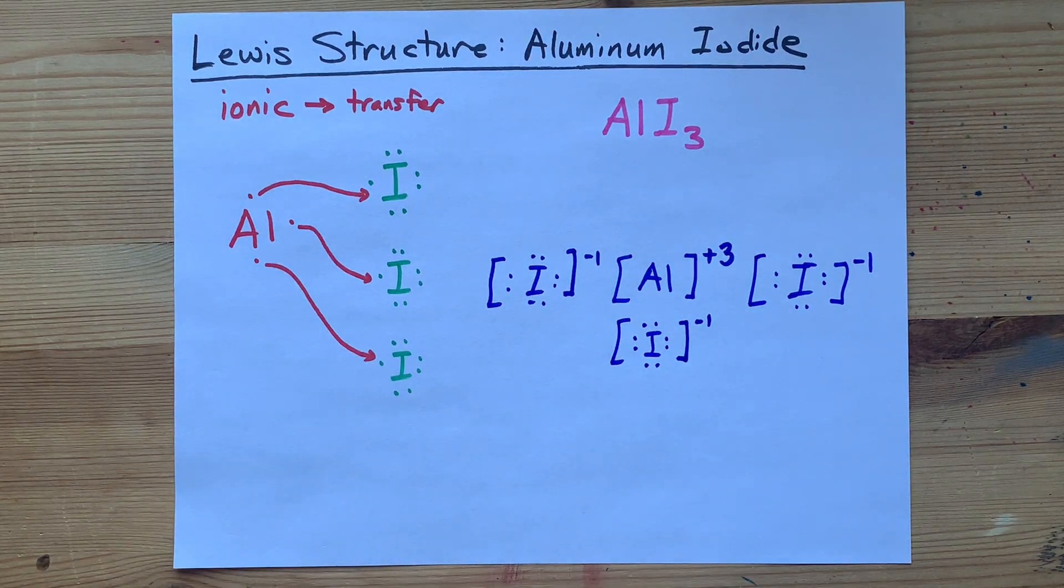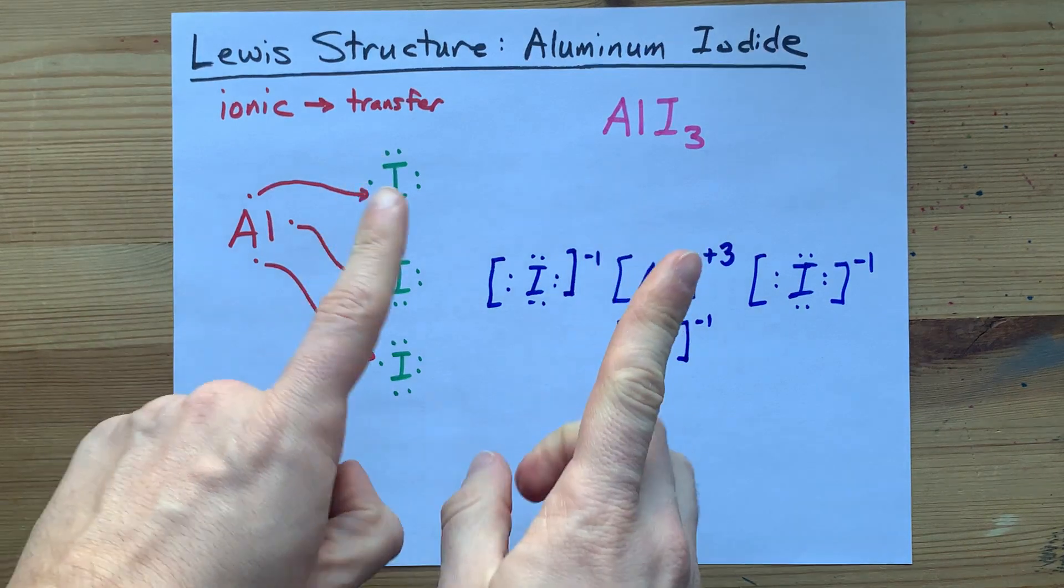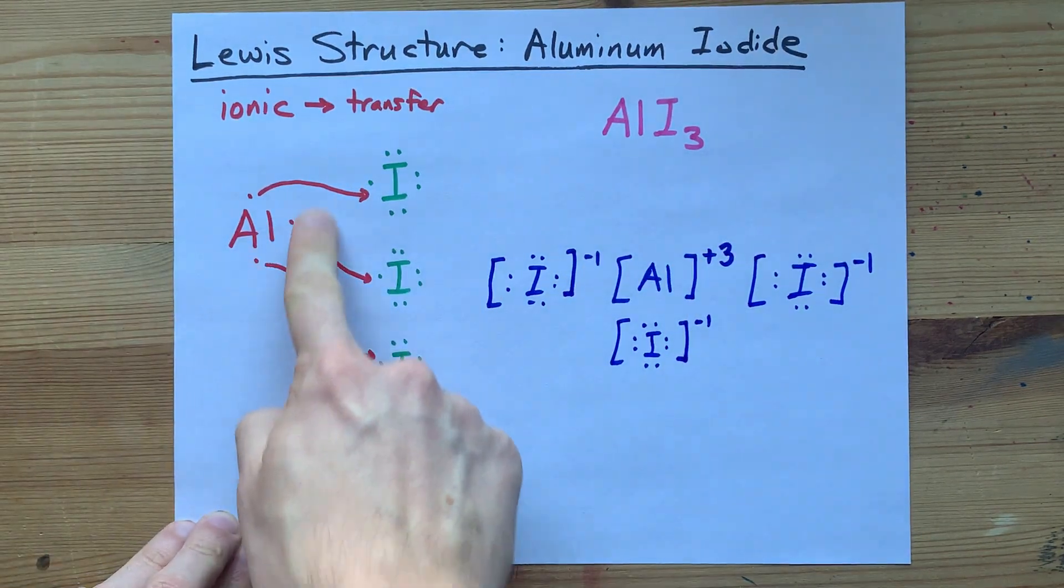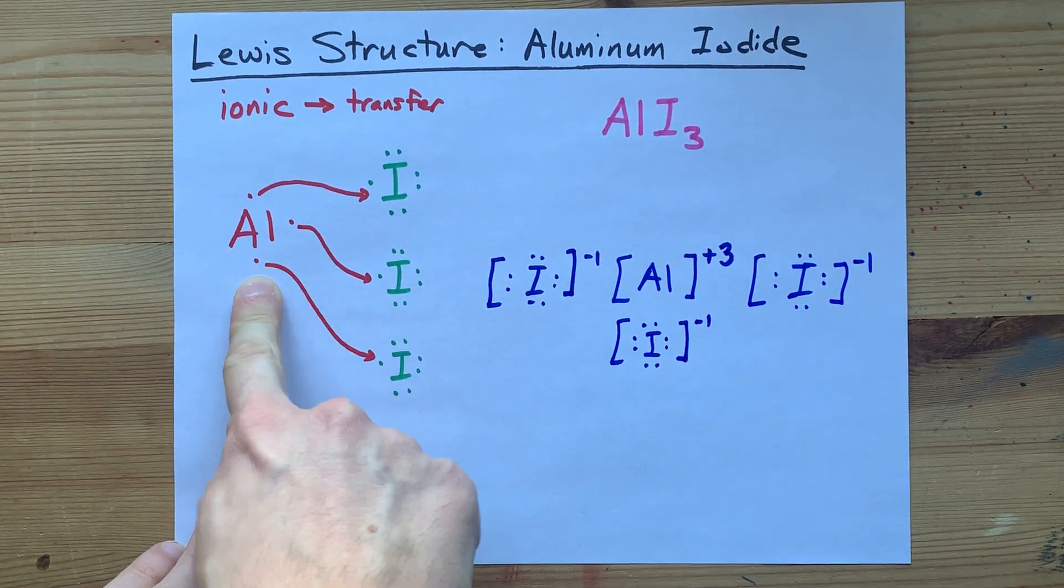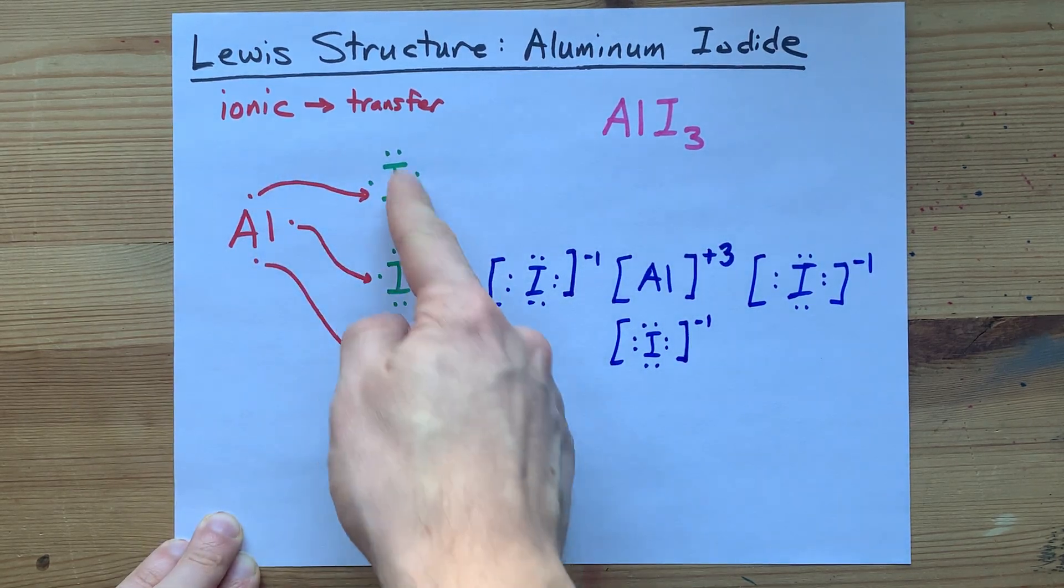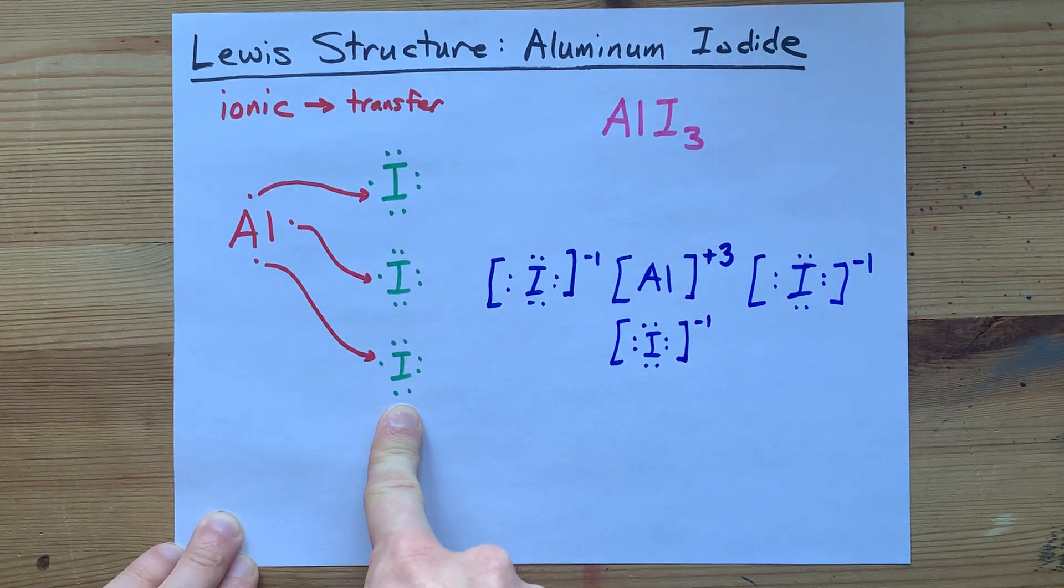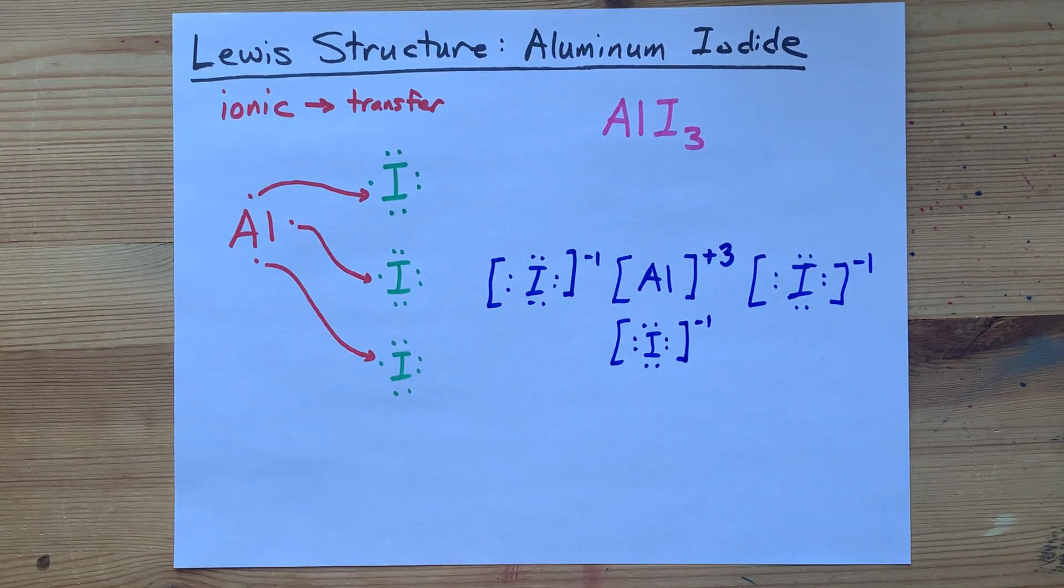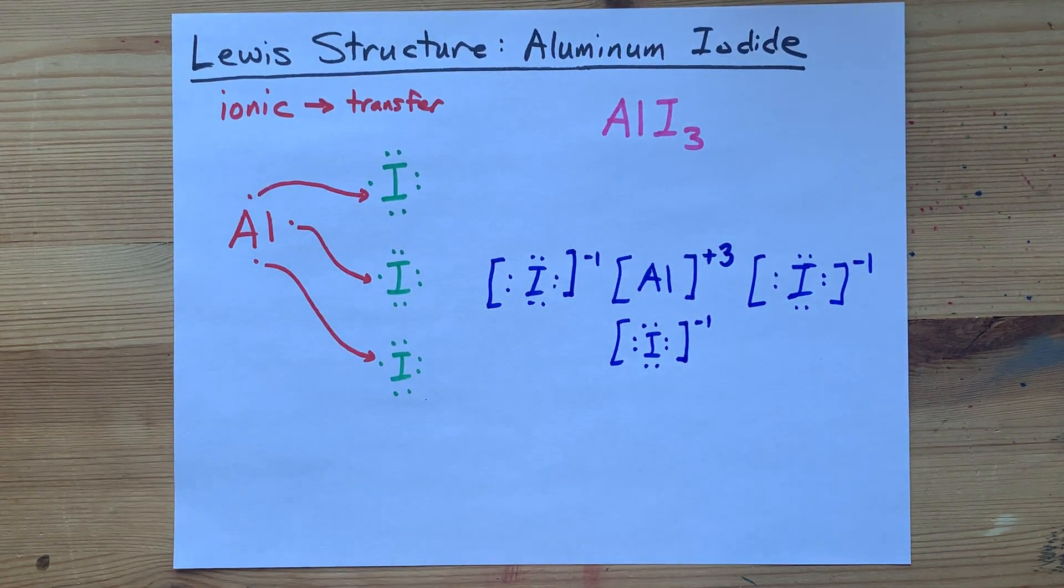That is the completed Lewis structure for aluminum iodide. Easy to draw once you know what to expect. Three electrons on the aluminum to start, giving its electrons away to three iodines, which require one more electron to become stable. Absolutely beautiful.